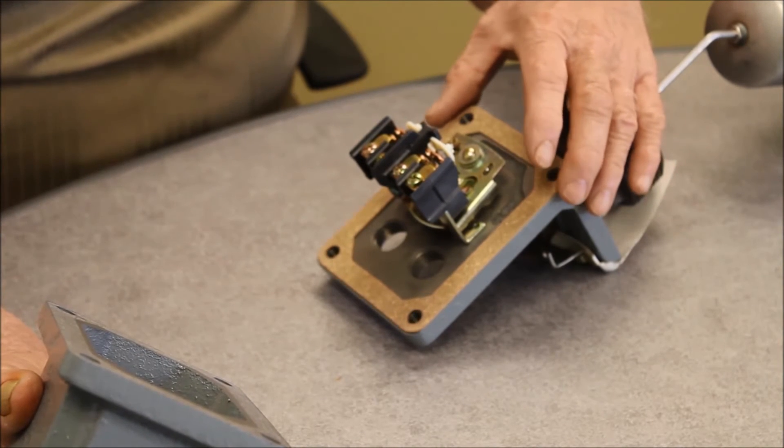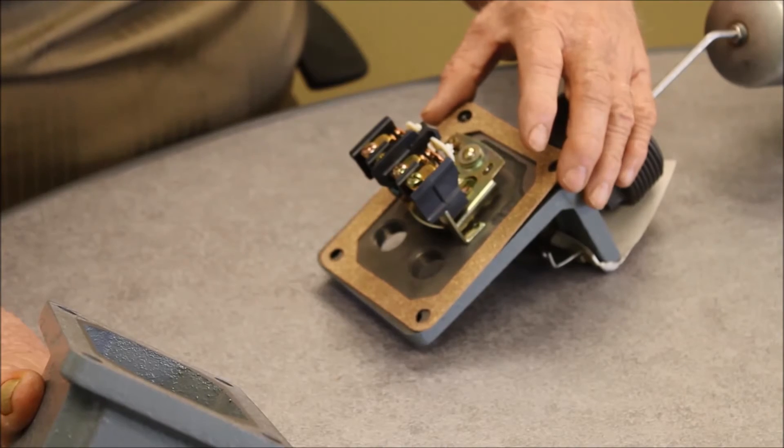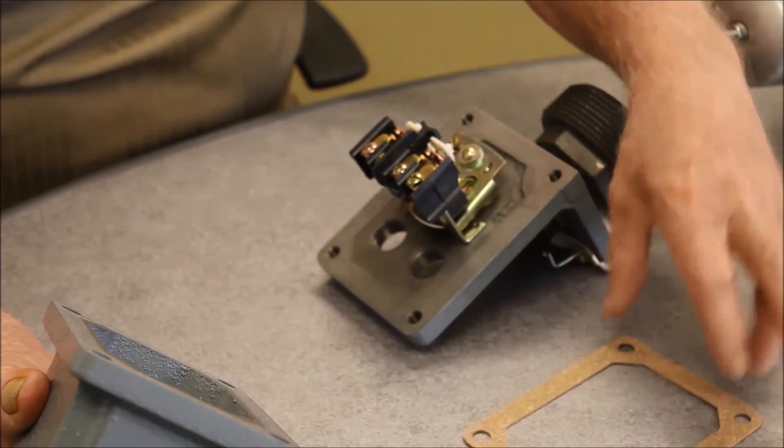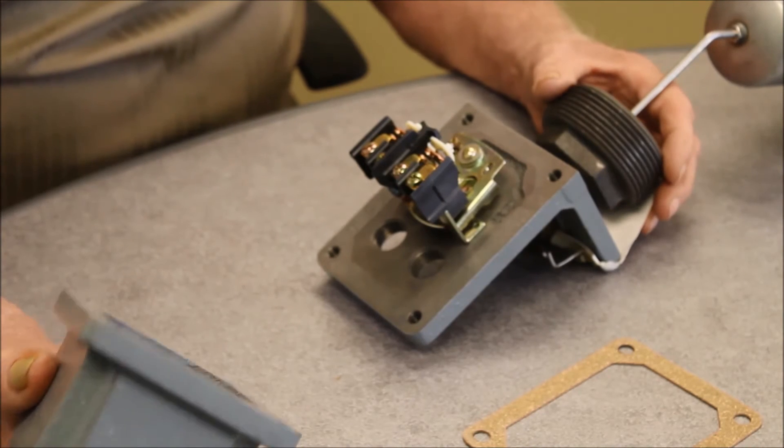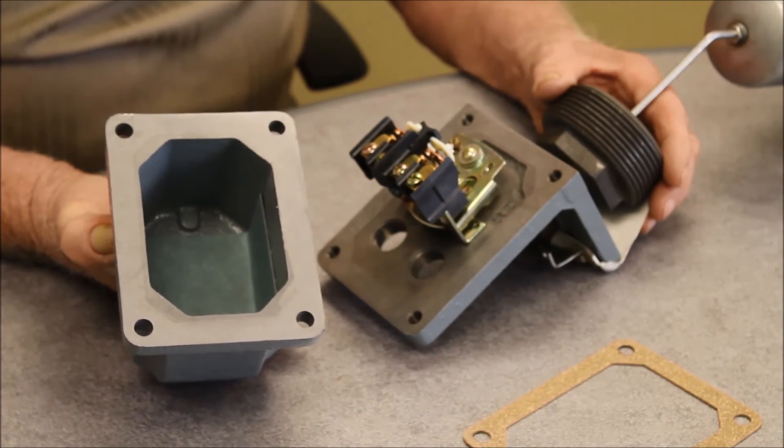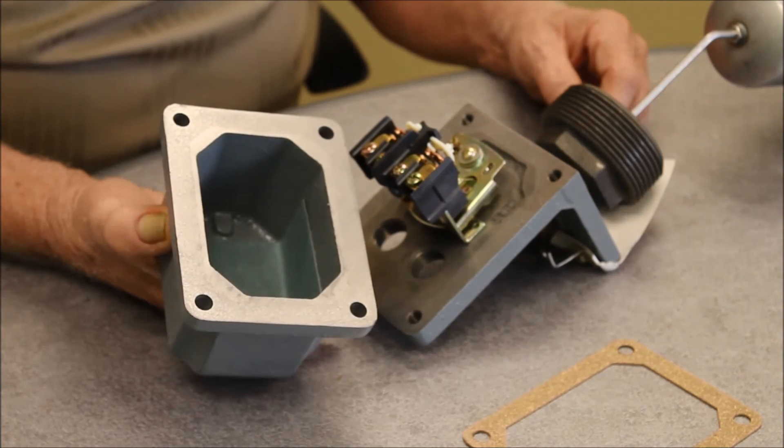Installing a gasket on a NEMA 7 and 9 will destroy the hazardous location rating and should never be done. A NEMA 7 and 9 device is machined for a tight fit to allow controlled escape of gases and should never ever be gasketed.